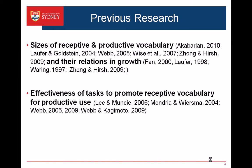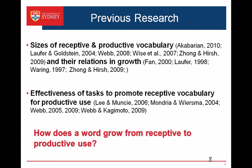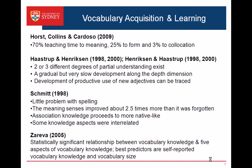The effectiveness of tasks is another big area of study looking at these two types of vocabulary knowledge. It is found that receptive vocabulary tasks are more likely to promote receptive vocabulary knowledge, while productive tasks are more likely to increase productive ability in vocabulary use. However, if we want to see what makes a word grow from receptive to productive use, besides the effectiveness of tasks, we have to examine what aspects or dimensions of vocabulary knowledge a task has an effect on, so as to promote productive use of a word.